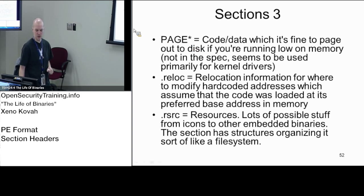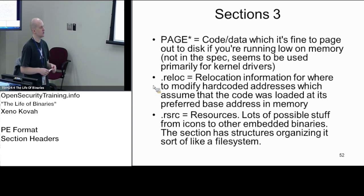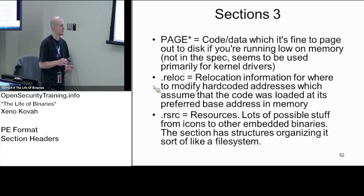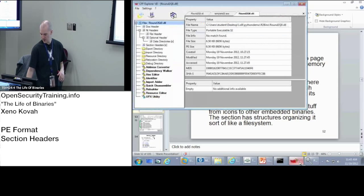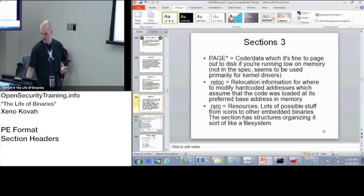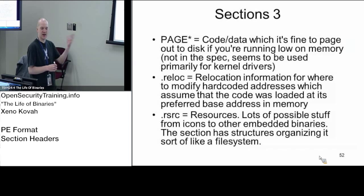.reloc is relocation information. If the thing is going to get moved around in memory, it needs a data structure that says here are all the constants you need to update in my code. .reloc is the section which typically holds that. .rsrc (resources) — I showed before in Notepad — resources are things like pictures, icons for the file at different resolutions. With a rootkit class example you'll see gmerp, which can embed an actual kernel module in its resource section, then pulls the kernel module out, dumps it to disk, loads it up so the kernel module is running, and then communicates with it.